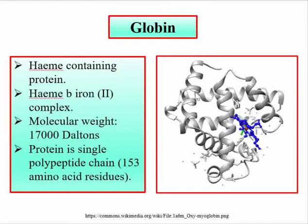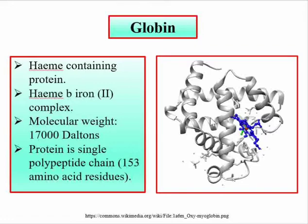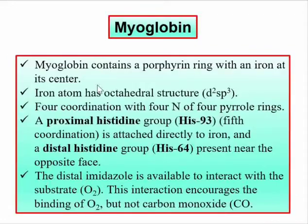The complete structure of myoglobin consists of the heme group and the globin part, which is a single polypeptide chain with 153 amino acids. The total molecular weight of myoglobin is around 17,000 daltons.